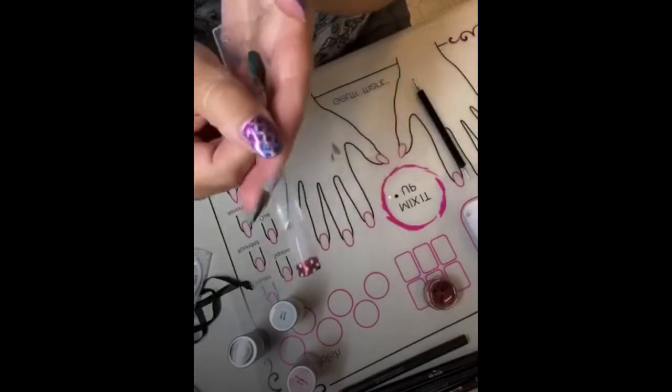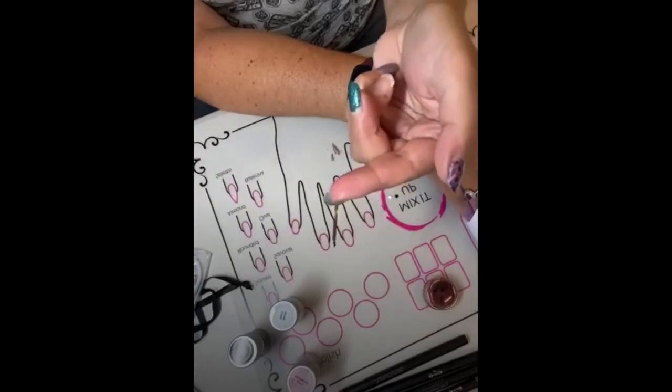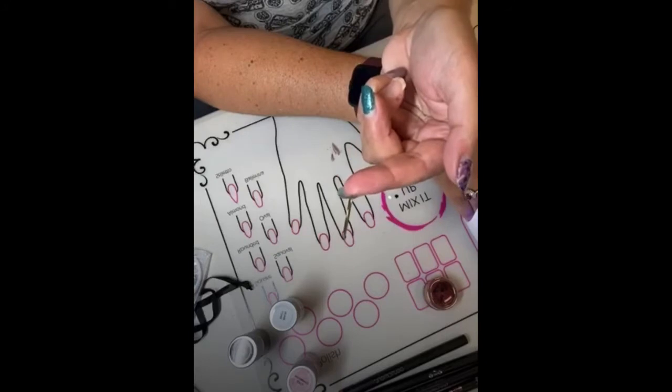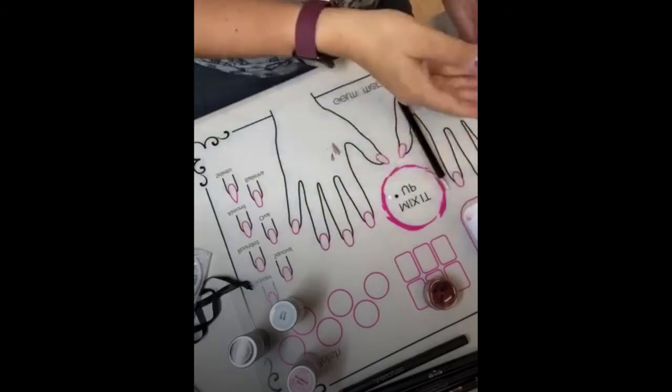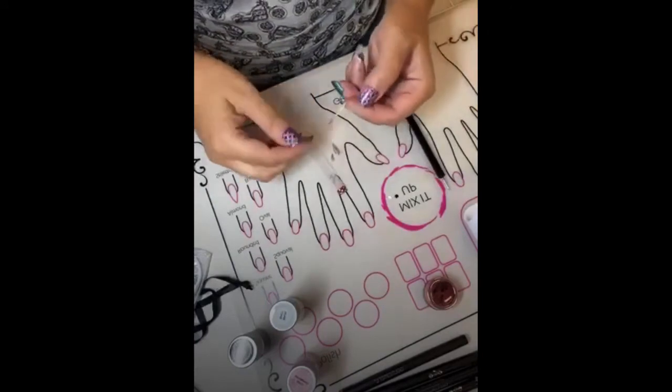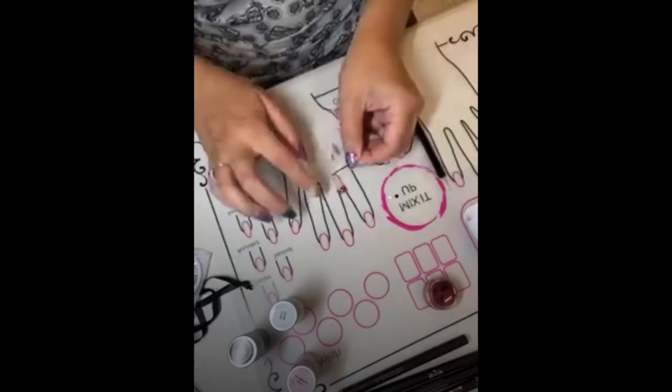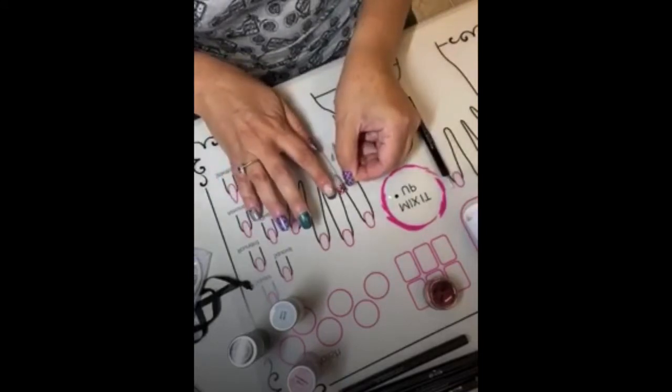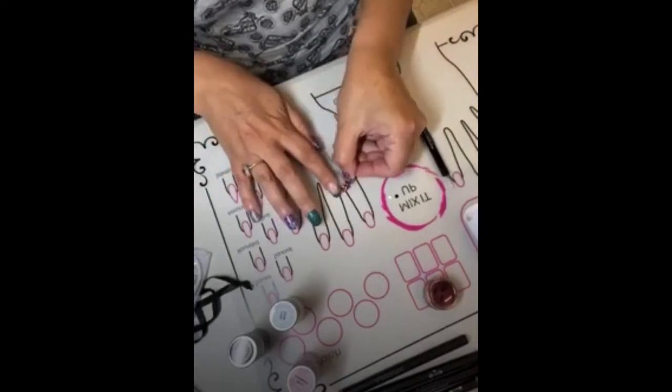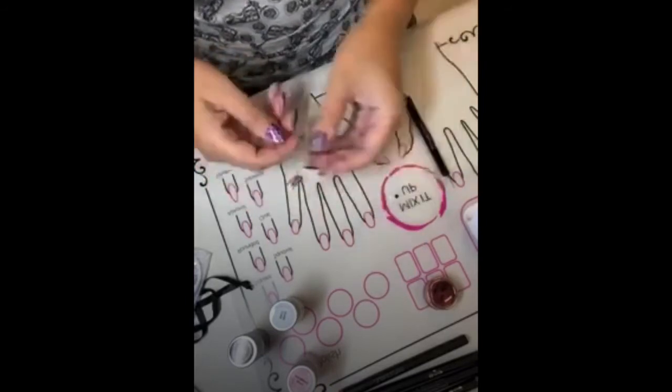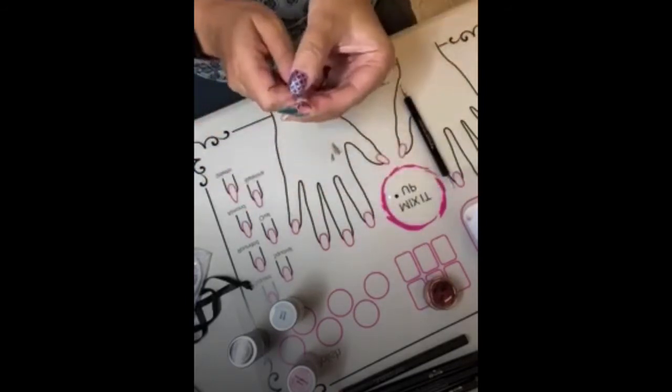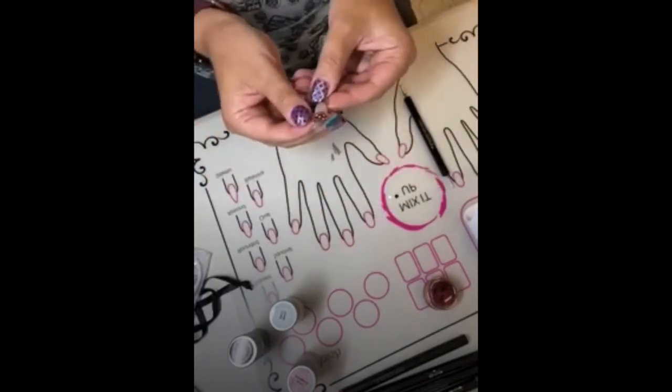Then you're going to cure that for 45 seconds. Once it's curing, I cut a piece of the gold styling strips, and then I'm going to apply that to the very top of the red Quasar chrome powder tip and cut the extra styling strips off from each side.